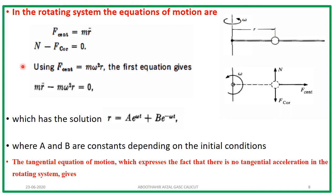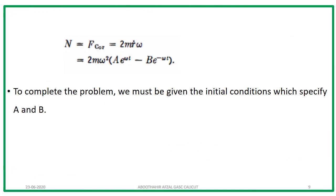The tangential equation of motion expresses that there is no tangential acceleration in the rotating system. The Coriolis force is given by 2mṘω = 2mω²(Ae^(ωt) − Be^(ωt)), obtained by substituting Ṙ (i.e., dR/dt) from the solution for R. To solve this problem completely, the initial conditions must be known to determine A and B. This illustrates the effect of the Coriolis force, which is perpendicular to both the angular velocity and the centrifugal force.